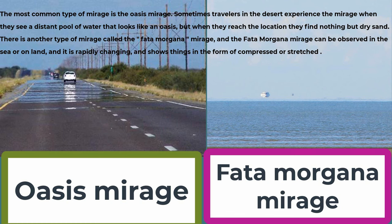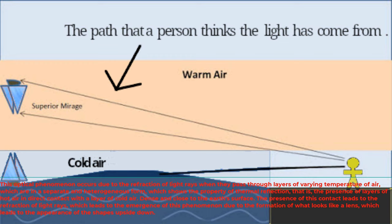The most common type of mirage is the oasis mirage. Sometimes travelers in the desert experience the mirage when they see a distant pool of water that looks like an oasis, but when they reach the location they find nothing but dry sand. There is another type of mirage called the Fata Morgana Mirage, and the Fata Morgana Mirage can be observed in the sea or on land, and it is rapidly changing and shows things in the form of compressed or stretched. This optical phenomenon occurs due to the refraction of light rays when they pass through layers of varying temperature of air, which are in a separate and heterogeneous form, which shows the property of thermal reflection, that is, the presence of layers of hot air in direct contact with a layer of cold air, dense and close to the Earth's surface. The presence of this contact leads to the refraction of light rays, which leads to the emergence of this phenomenon due to the formation of what looks like a lens, which leads to the appearance of the shapes upside down.